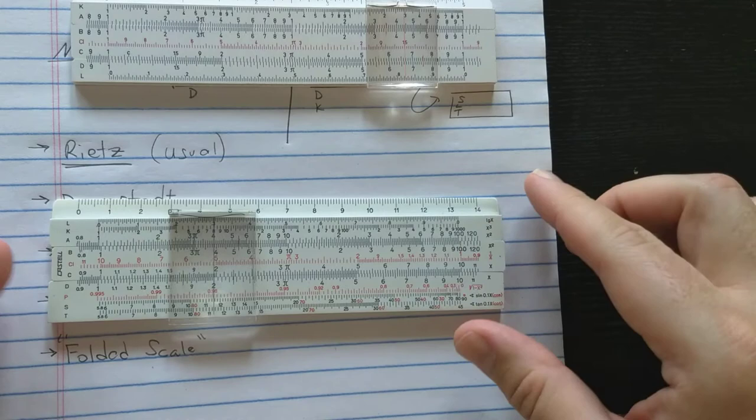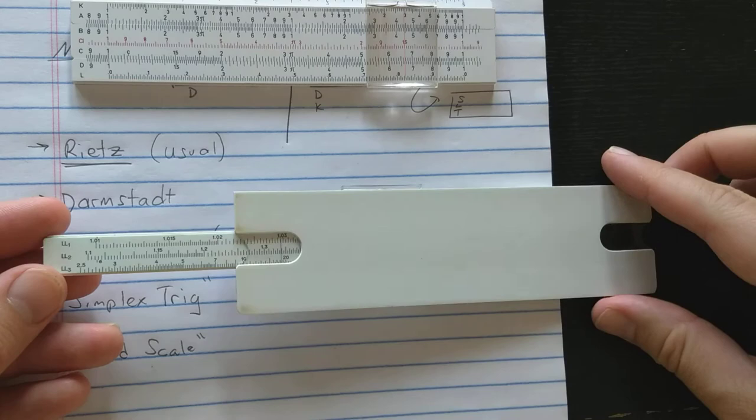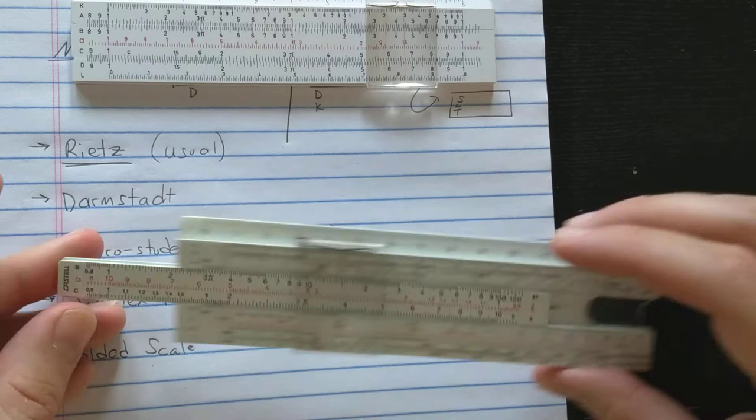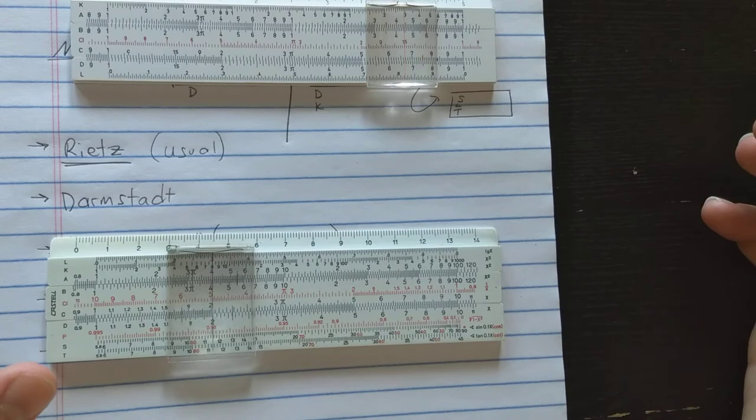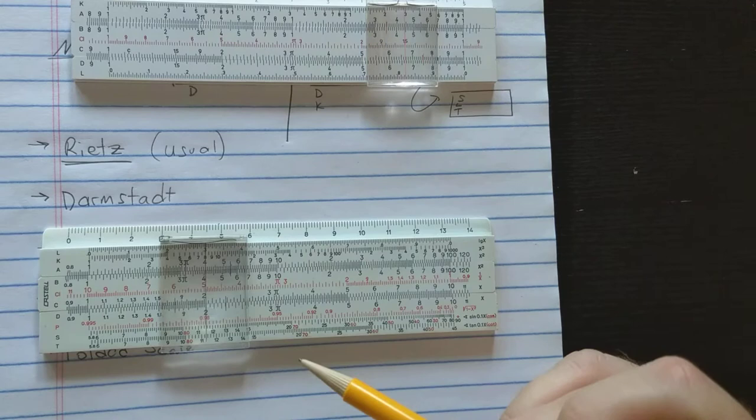Now the other innovation of the Darmstadt slide rule is that it contains log-log scales. Those log-log scales are on the back of the slide. Many or most Darmstadt slide rules contain a line for reading them on the back, but you could also flip the slide over. So this slide rule has a classic Darmstadt scale set even if it's not a classic wooden construction where the L scale is off here and the S and T scale are off the bottom.